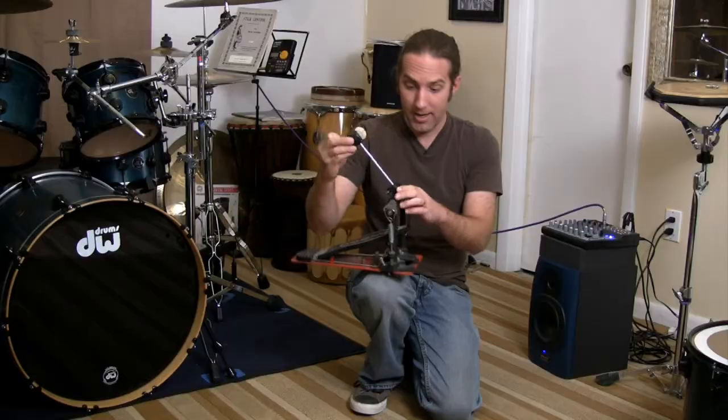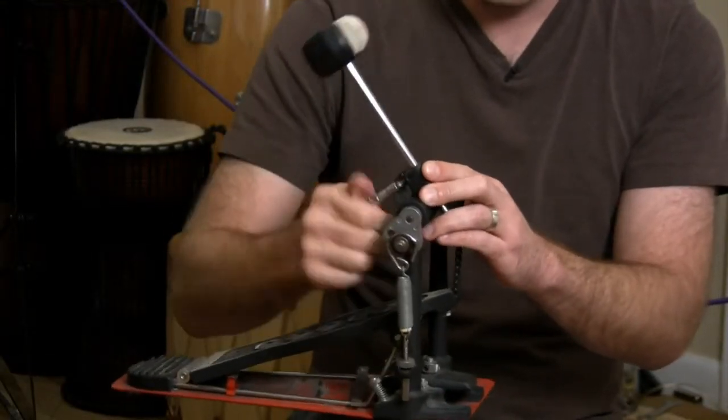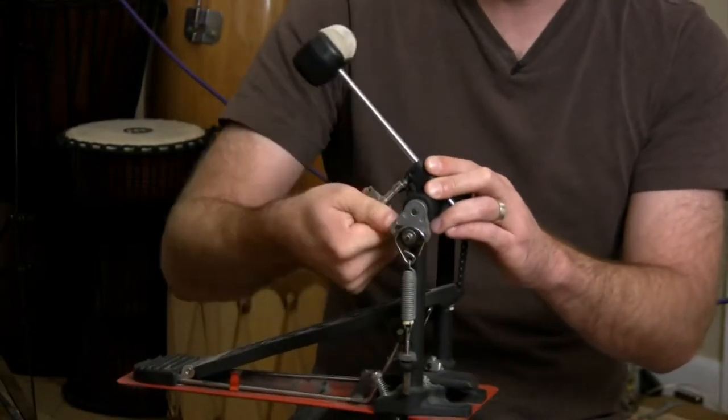You just slide it back in, tighten it back down with your drum key, and you're good to go. You've just replaced the rod on a bass drum pedal.